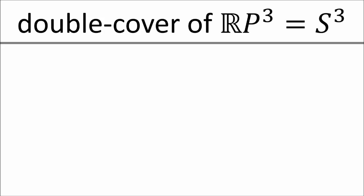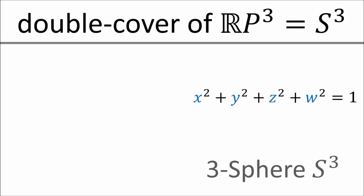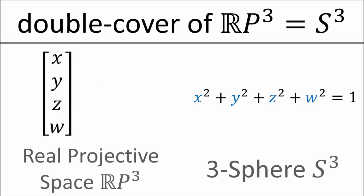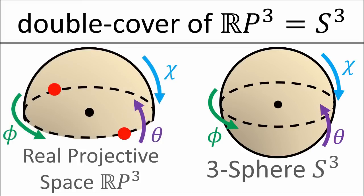This pattern continues in the next dimension with the three-sphere, which is too high-dimensional for us to visualize, but we can describe it with an equation. The real projective three-space, RP3, is also too high-dimensional for us to visualize. However, we can think of it as the three-sphere with opposite points projected to the same point in three-dimensional space. Points in real projective three-space can be described by three ratios: y over x, z over x, and w over x. Any points in four-dimensional space that have the same three ratios will exist along the same line through the origin, and so they will get projected to the same point in real projective three-space. RP3 can be thought of as half of a three-sphere, where if we walk off the edge we get immediately teleported to the other side.